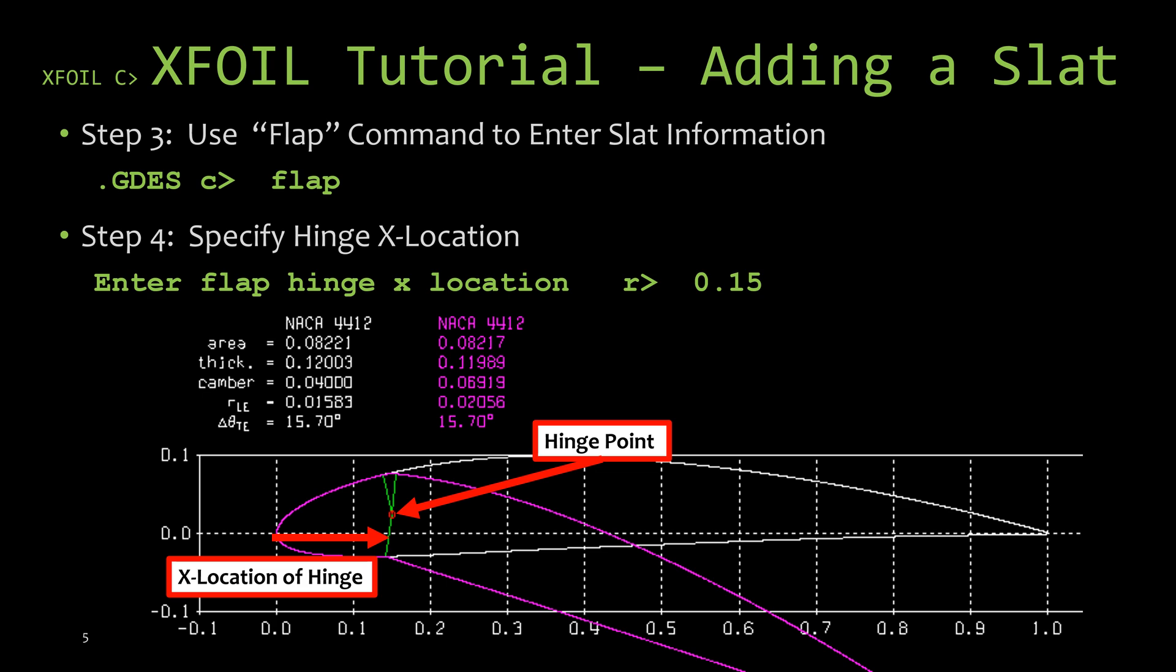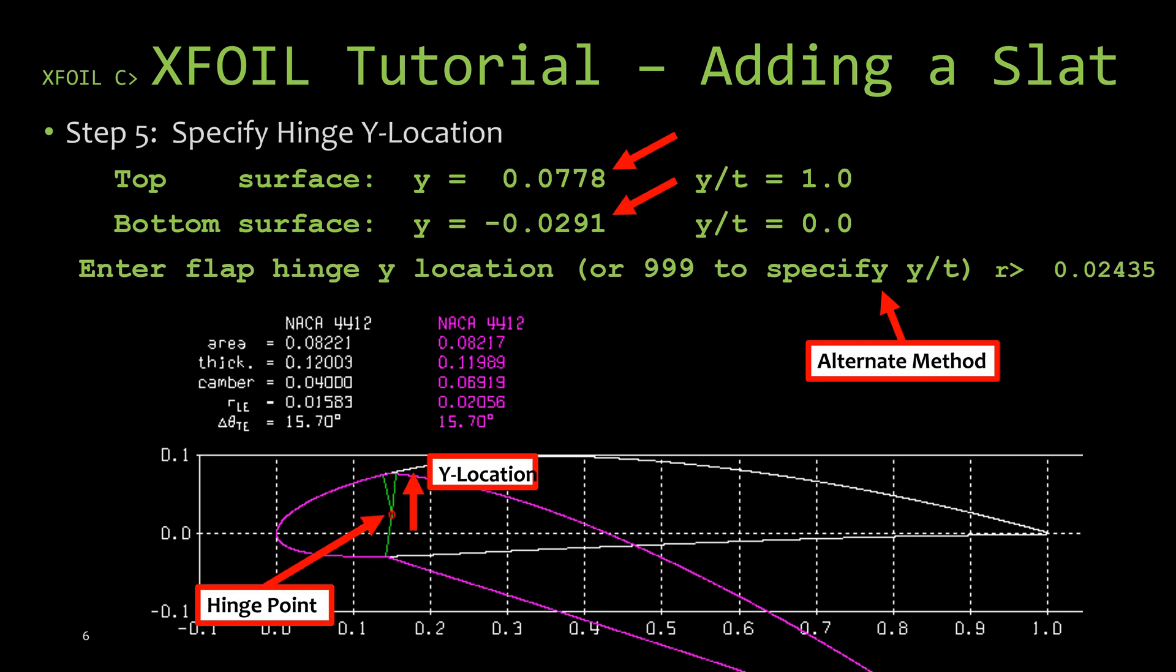The next step would be to specify the y location that you're wanting the slat to hinge at. For this example, we're going to put this at about half the thickness of the airfoil.